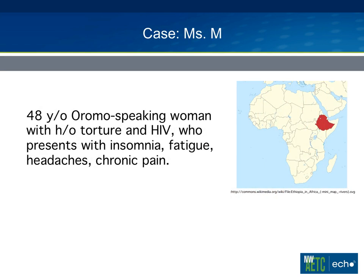I want to come back briefly to our case from last week: a 48-year-old Oromo-speaking woman with a history of torture and HIV who presented with insomnia, fatigue, headaches, and chronic pain. This patient was undocumented, and because of her history of female genital mutilation — for which there is case law establishing eligibility for asylum — we were able to refer her for legal counsel and help her file an asylum application. Once you file an asylum application, you become Medicaid eligible. Using a patient-centered model, we asked what her main concern was, and it was sleep and insomnia. Underlying that insomnia were chronic nightmares, so treating those nightmares was a way to establish rapport and get her engaged in care.